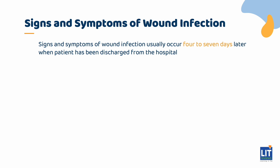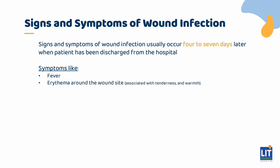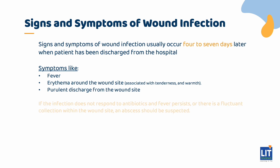Signs and symptoms of wound infection usually occur four to seven days later. These would include fever, erythema around the wound site, particularly if associated with tenderness and warmth. Purulent discharge from the wound site is a telling sign. If the infection does not respond to antibiotics and persistent fever, or there is a fluctuant collection within the wound site, an abscess should be suspected.